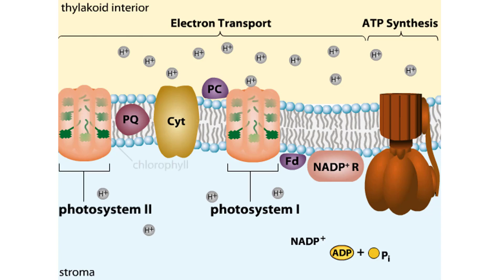In addition to the chlorophyll molecules and other pigments, these complexes contain proteins. The photosystems function to absorb light energy and donate excited electrons to carriers in an electron transport chain.